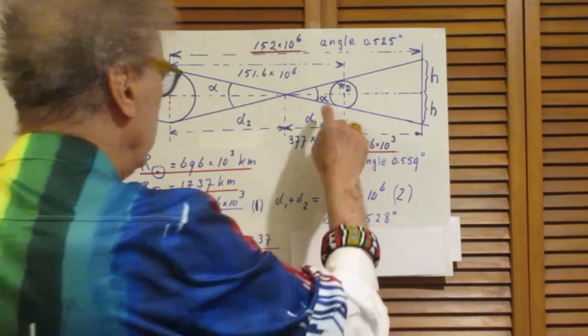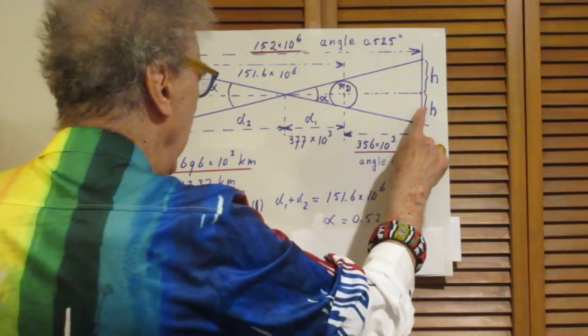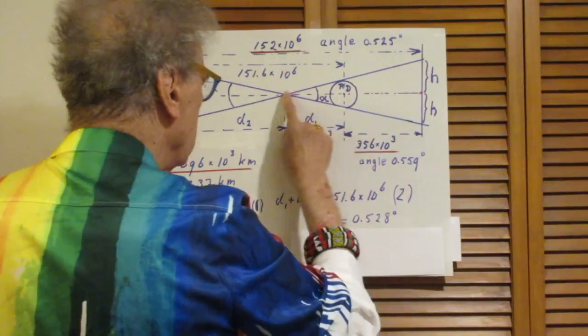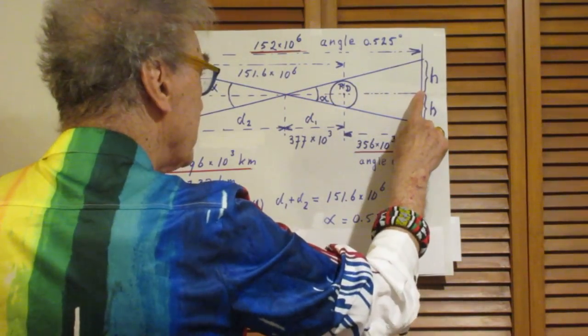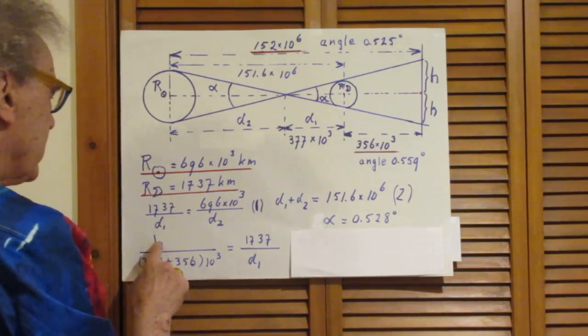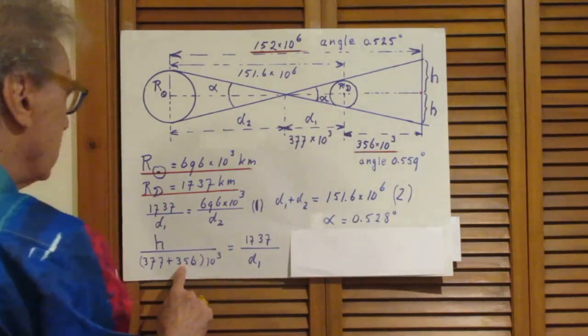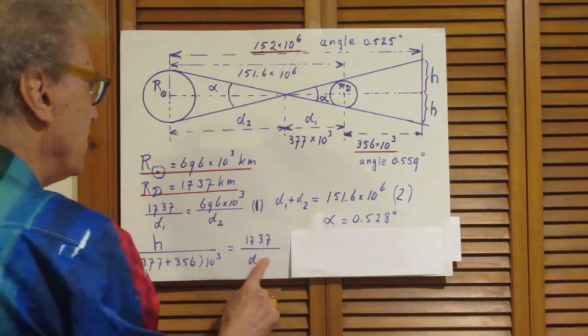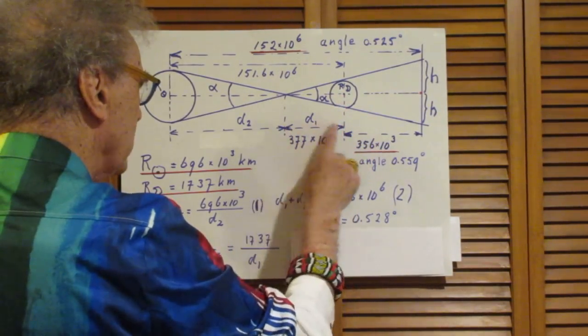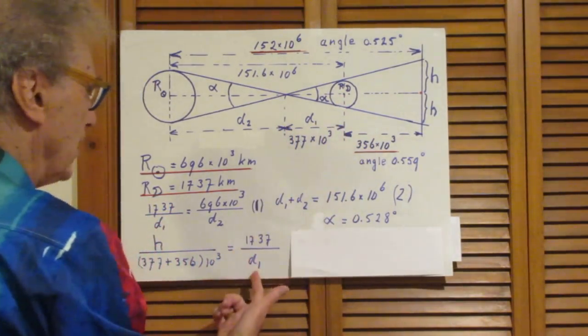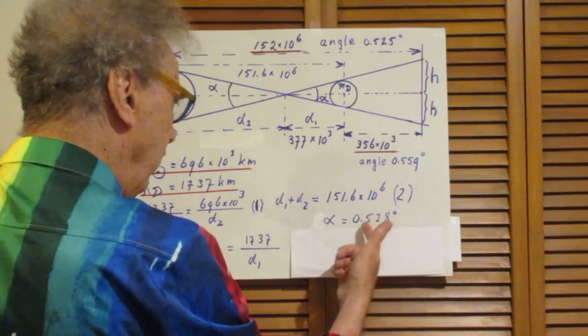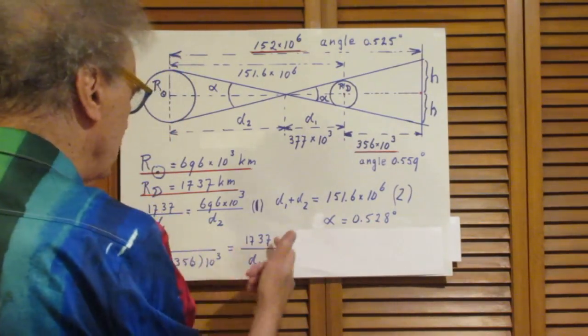Because the tangent of half this angle and the tangent of half that angle are to a high degree of accuracy the same. Okay, so now we know this angle, this distance. So we are now almost done. Because in this triangle, H divided by this distance is the tangent of one half alpha. So H divided by this distance is the tangent of one half alpha, which is the same, of course, as the radius of the moon divided by this distance.